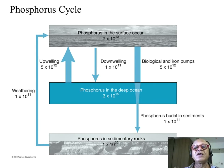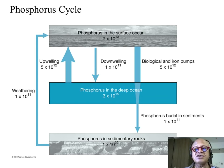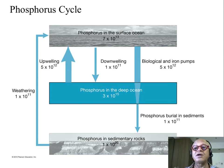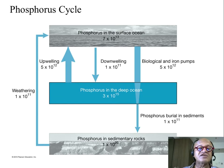There is phosphorus in the surface ocean. Phosphorus is predominantly generated by weathering of sedimentary rocks. There is a massive reservoir of phosphorus in sedimentary rocks — 10^20 petagrams.